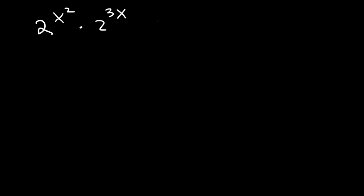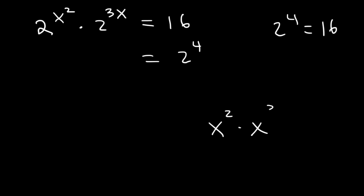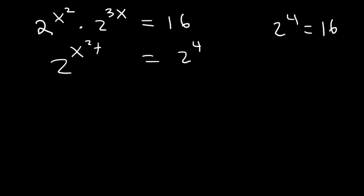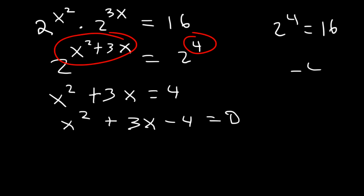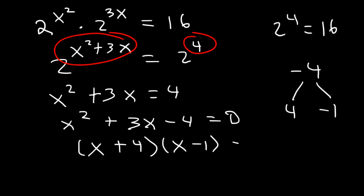Here's another example: 2 raised to the x squared times 2 raised to the 3x equals 16. Since 2 to the 4th is 16, and when multiplying a common base we add exponents, we get 2 to the x squared plus 3x equals 2 to the 4th. Setting x squared plus 3x equal to 4, then subtracting 4: x squared plus 3x minus 4 equals 0. Factoring gives x plus 4 times x minus 1, so x equals negative 4 or x equals 1.